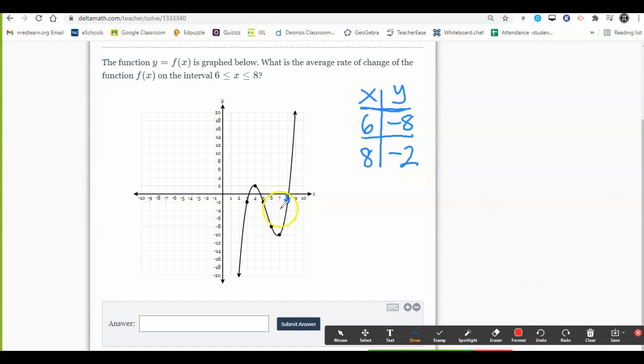The average rate of change is the distance from the first point on the interval to the second point on the interval, and you do take that straight line path. So the question is, what's the rise and what's the run?